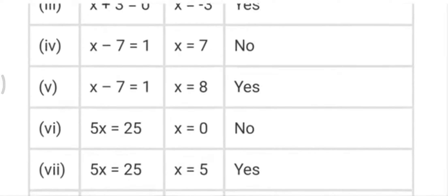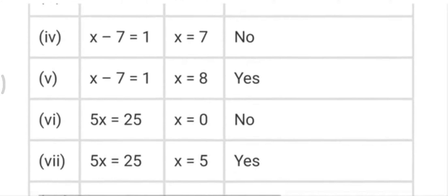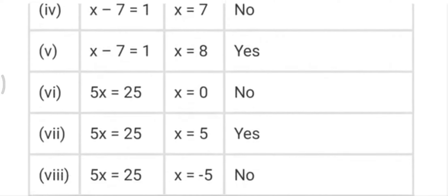In the fourth part, x-7=1. Here we put x=7, so 7-7=0 which is not 1, so we write no. In the fifth part, x=8, so 8-7=1 and the right-hand side is also 1, so we write yes.